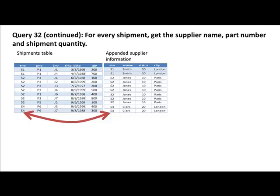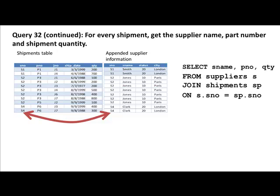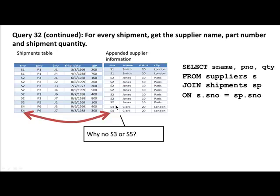Continuing the same query: SELECT s_name, part_number, quantity FROM suppliers s JOIN shipments sp ON s.s_number = sp.s_number. An important point to notice in the joined result is that we don't see s3 or s5 — only s1, s2, and s4. That's because s3 and s5 have made no shipments in the shipments table. This is an important property of this kind of join: joining occurs only for rows where there is a match on the join field.